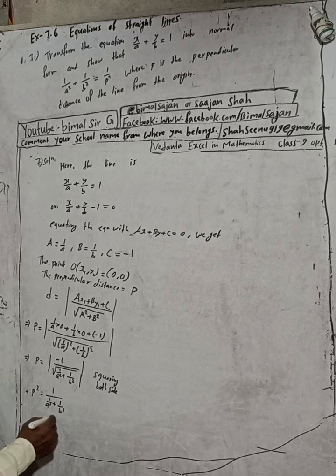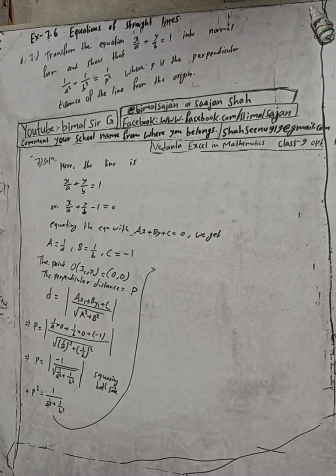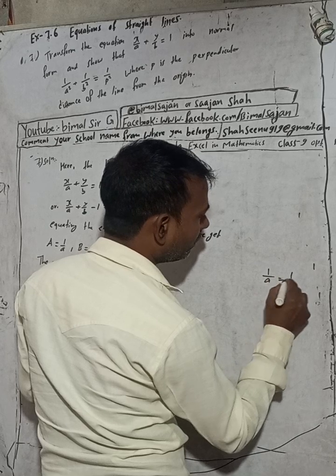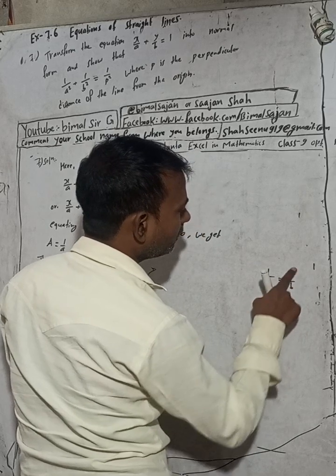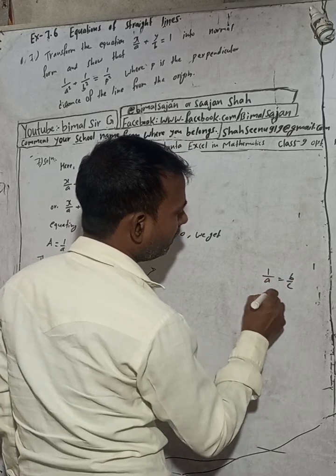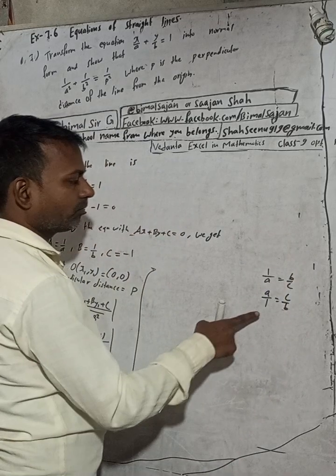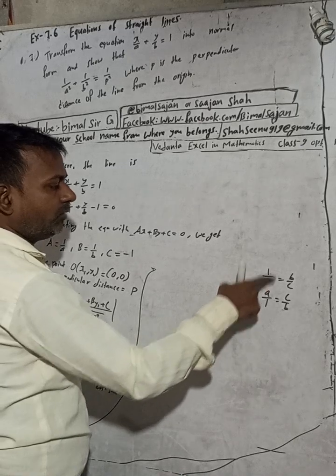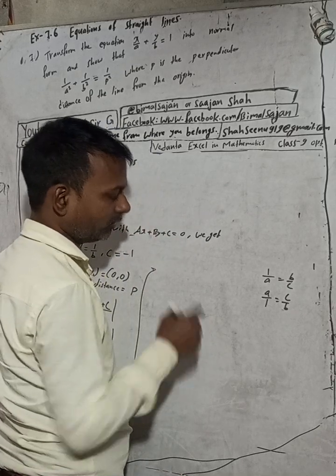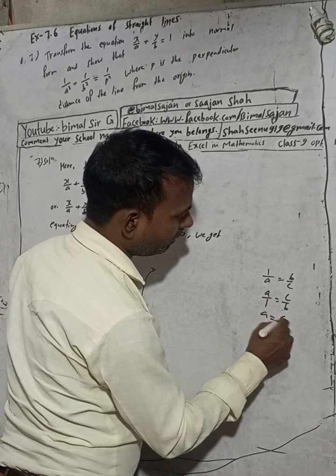So now I will solve after this here. When we reciprocate it, reciprocate means what? Suppose there is 1/a equals 1/b, this means reversing, so a/1 equals b/c, reciprocating. Reversing of the reciprocal.